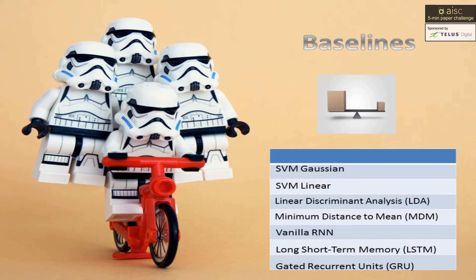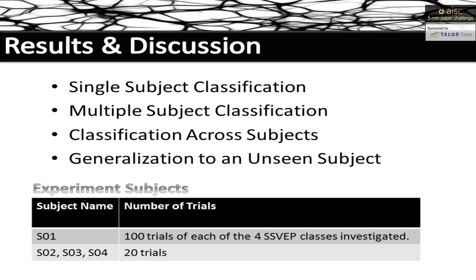To run tests on the baselines, the authors used preprocessing to remove unwanted signals and to focus on signals within the desirable frequency ranges. Then the Riemannian approach was used for feature extraction. The results are presented in four categories with four experimental subjects, where subject number four is an unseen subject used for the EEG unseen-subject generalization task.